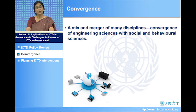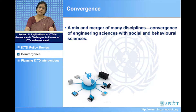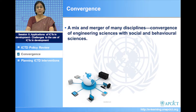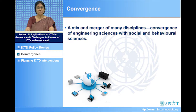Convergence also means a mix and merger of many disciplines — the convergence of engineering sciences with social and behavioral sciences. For example, if you are going to develop a website, you need not only engineers and programmers to code it, but also someone with good language skills, subject skills to write the content, someone to develop the content. We need linguists and social scientists, someone for instructional design, someone to advise on colors — these are all behavioral sciences and humanities.